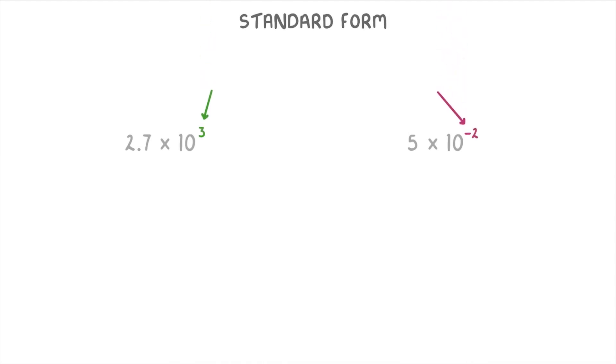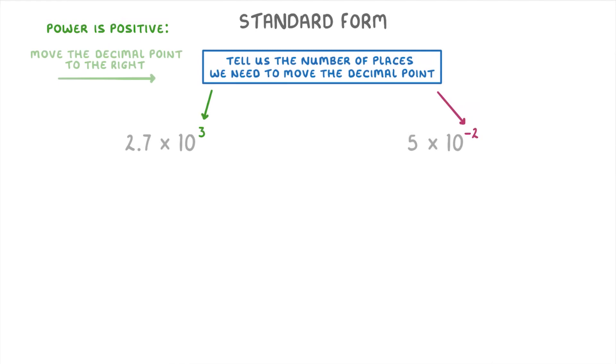Now another way that you can think about these powers is that they tell us the number of places that we need to move the decimal point. If the power is positive, then you move the decimal point to the right, making the front number bigger. But if the power is negative, then you move the decimal point to the left, making the front number smaller.